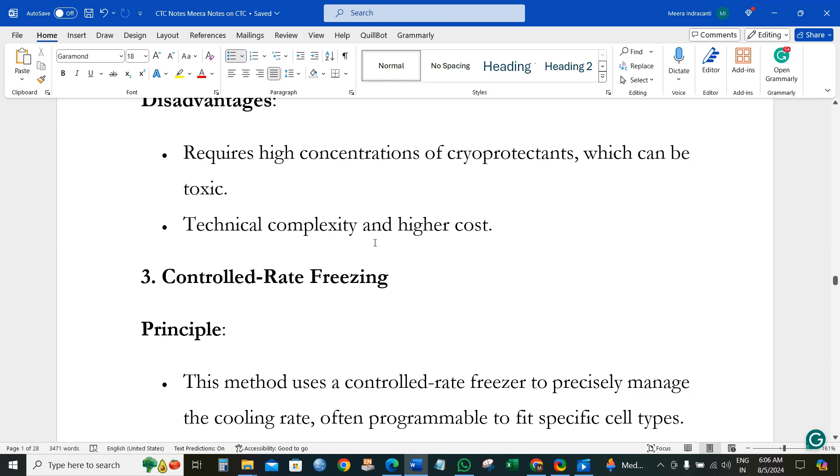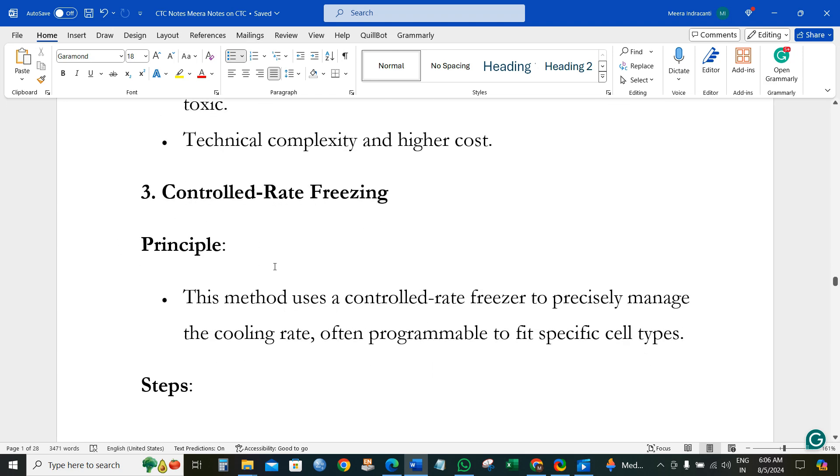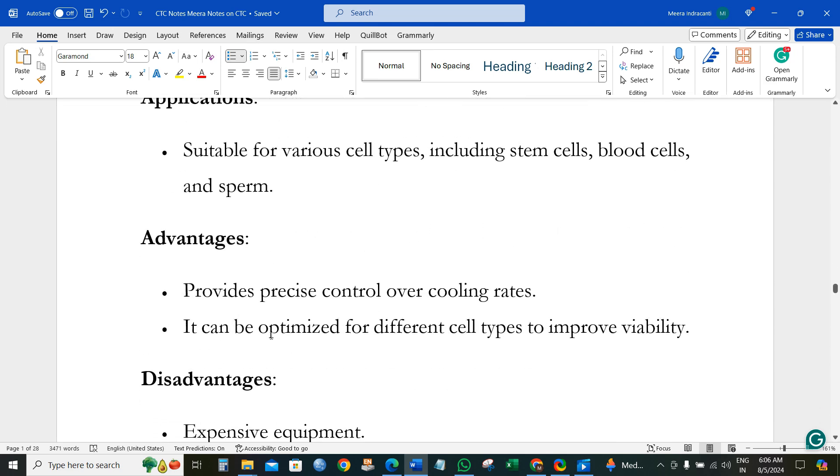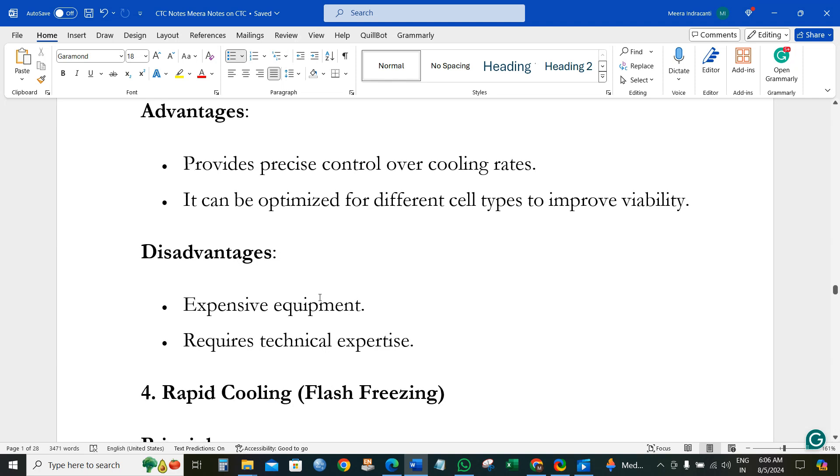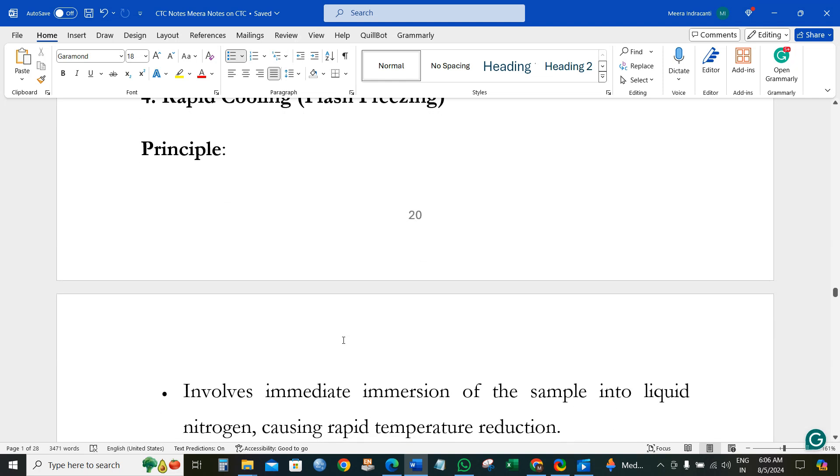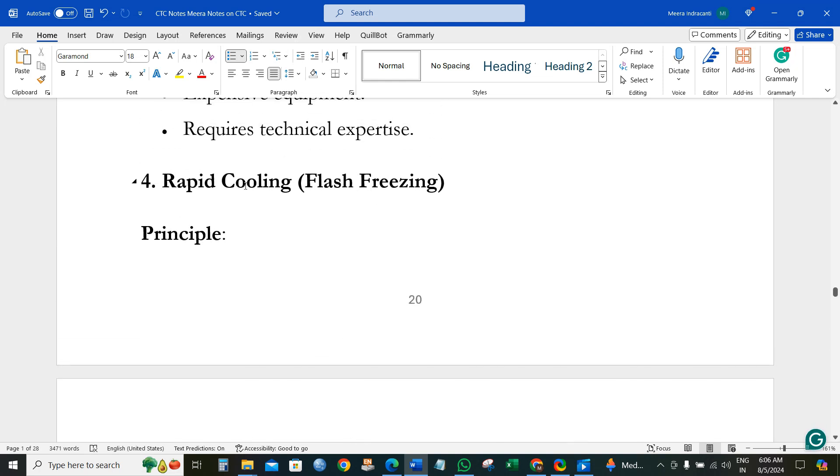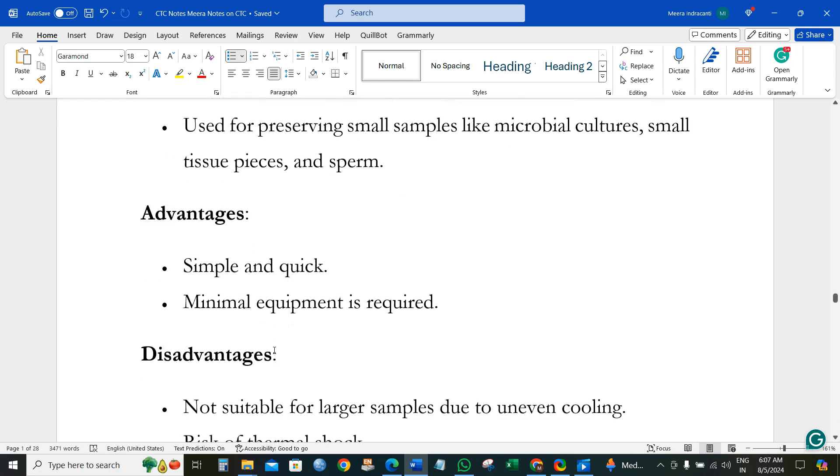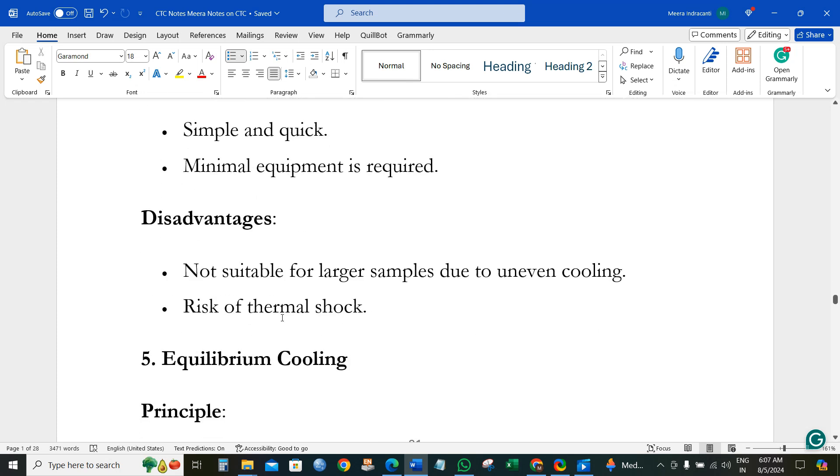Controlled rate storage is suitable for various applications but expensive equipment is required for this cooling process and technical expertise is needed. Flash freezing involves rapid cooling with simple and quick steps requiring minimal equipment. The limitation is the risk of thermal shock due to temperature differences, which may cause cell damage.